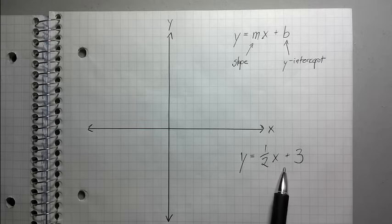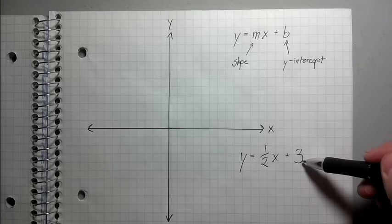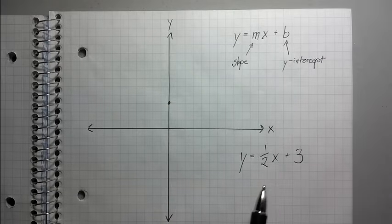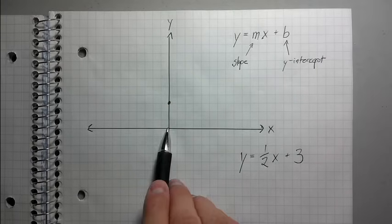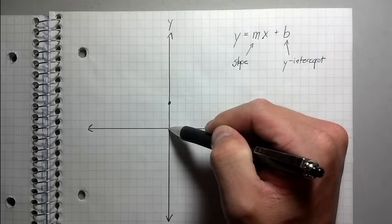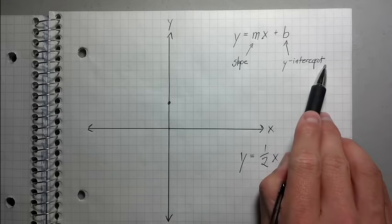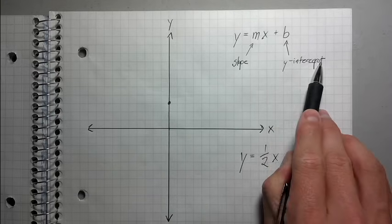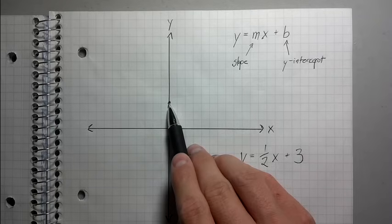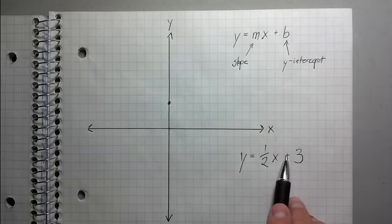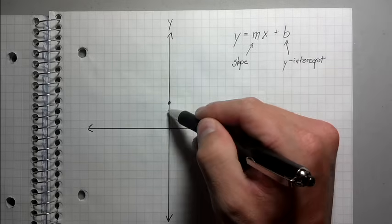The first thing you want to do is look at 3 — this is where you start. This is the y-intercept. Whatever this number is, this is positive 3, so I'm going to put a dot right here. The reason I put a dot on 3 is because starting from the origin, if I counted up 1, 2, 3 on the y-axis, this is going to be my y-intercept. The y-intercept is called that because this is the place where it intercepts the y-axis. If this was a negative 3, I would have counted downward, but since it's positive, I counted upward.